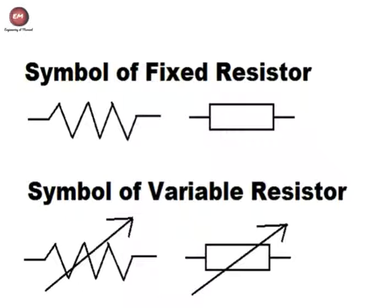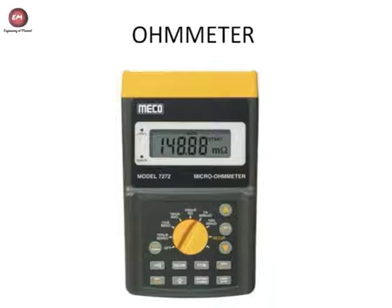Now the symbols of fixed and variable resistors. A fixed resistor is a resistor whose resistance is constant, and a variable resistor is a resistor whose resistance can be varied. In this figure, two symbols of fixed resistors and two symbols of variable resistors are shown. These symbols are used in electrical circuits to denote fixed and variable resistors. In industry, an Ohm meter is used to measure electrical resistance.